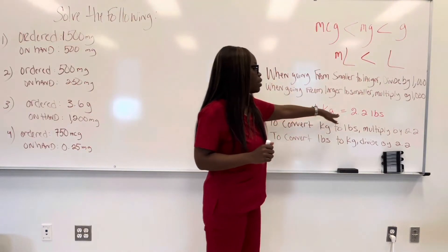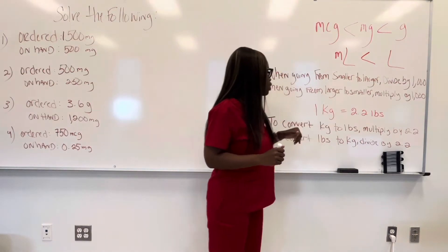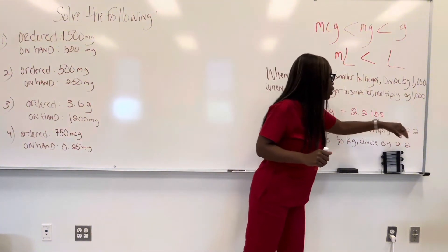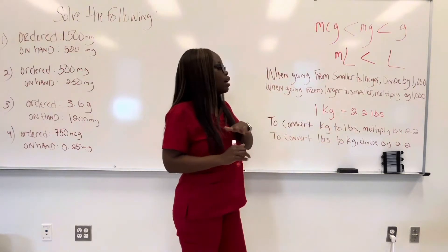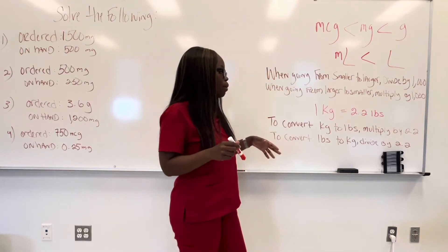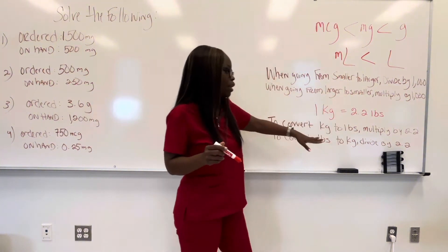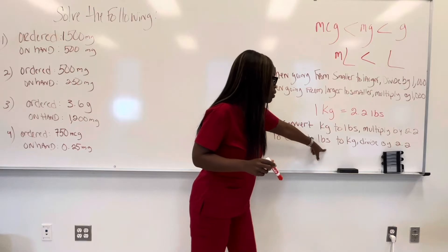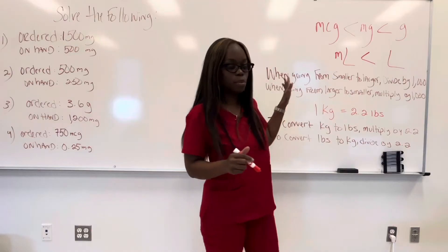Same thing with kilograms and pounds. We know that in one kilogram there are 2.2 pounds. So when converting kilograms to pounds, you multiply by 2.2. When converting pounds to kilograms, you divide by 2.2. Once you know the formula, all you're doing is plugging in a number. So if you get a problem that says the patient is 25 pounds, how many kilograms is that? You take 25 and divide it by 2.2. Simple.